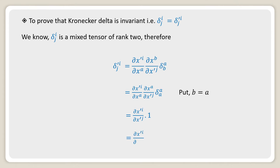So we will get only del x'^i by del x'^j into 1, which is nothing but del x'^i divided by del x'^j, and this is nothing but delta i^j. Hence Kronecker delta is invariant.